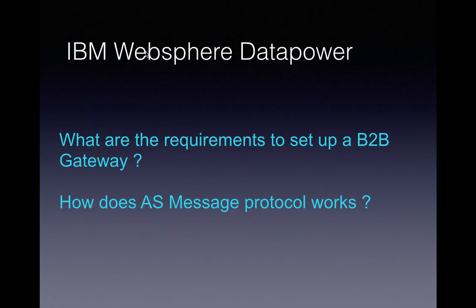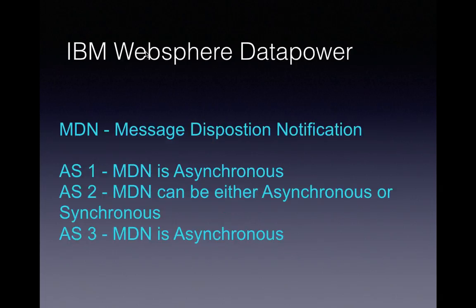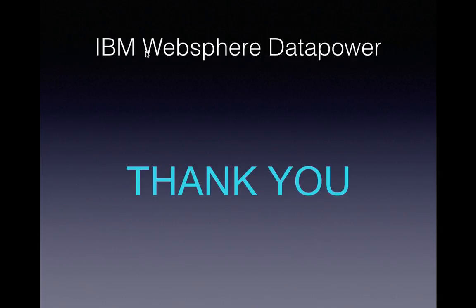The next question is how does the AS message protocol work. Using AS2 over HTTP as an example: after the message is forwarded, it requests an MDN, which stands for Message Disposition Notification. This tells you whether the message has been received by the end application or the partner. The MDN request and response works differently across the three protocols: in AS1 the MDN is asynchronous, in AS2 it can be either asynchronous or synchronous, and in AS3 the MDN is asynchronous. We will see more about how it works in later videos.